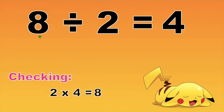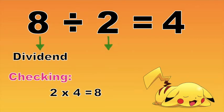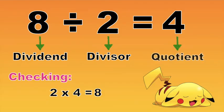Since our dividend and product are the same, our answer is correct. Always remember, children, that 8 is what we call the dividend, while 2 is the divisor, and lastly, 4 is what we call the quotient.